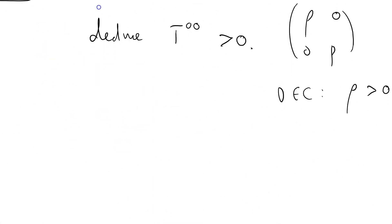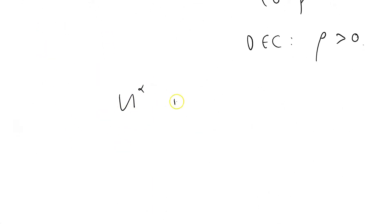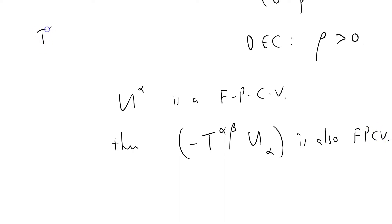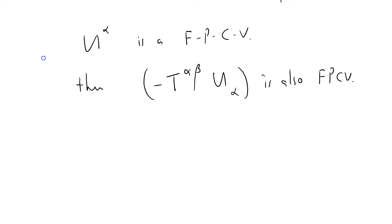So what have I got? I've got that if u is a future pointing causal vector, then minus T_αβ u^α is also a future pointing causal vector. And in a minute I'm going to substitute T_αβ equals diag(ρ, 0, 0, p) into it to see what happens for a two-dimensional perfect fluid. So that's v_β equals that — I'm going to have to evaluate that.